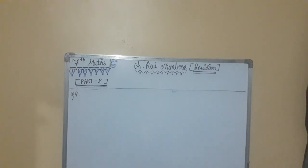Today we will learn Class 7th Maths Chapter Real Numbers Revision Part 2. Now we will start from Question No. 4. That's a word problem. Question 4 is: Find the smallest natural number by which 600 must be divided so that the quotient becomes a perfect square.